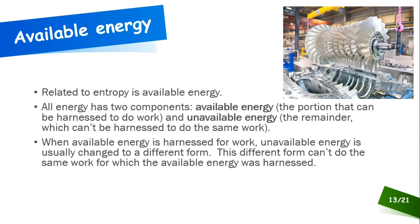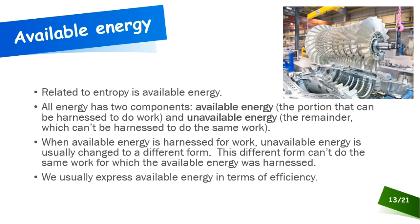For example, an engine produces mechanical work from pistons — that's what we want — but it also generates heat that can't be used to move the piston or drive the drivetrain. That energy is still there but it's unavailable energy. Because there's an available and unavailable portion, we want to know how much of the energy we can actually harness to do the work we want, which leads to the concept of efficiency.